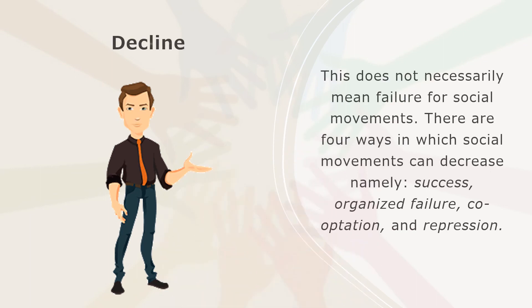The last stage is Decline, which does not necessarily mean failure for social movements. There are four ways in which social movements can decrease: success, organized failure, co-optation, and repression. In success, many social movements have goals that are much less clearly defined and many organize new campaigns once others are wrapping up, either through success or compromise. Organized failure usually occurs when there are strategical failures in the movement. Co-optation occurs when movement leaders come to associate with authorities or movement targets more than with the social movement constituents. Repression occurs when authorities or agents acting on behalf of the authorities use measures to control or destroy a social movement.